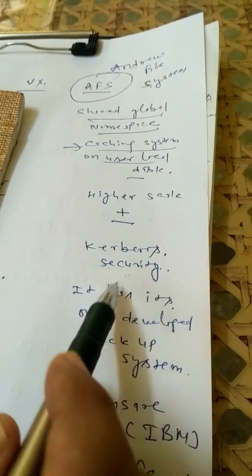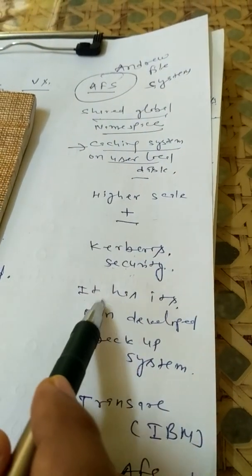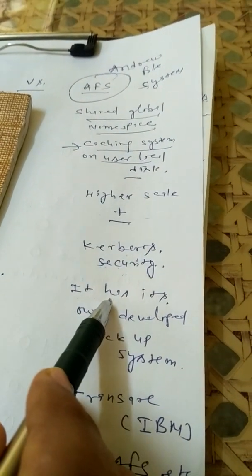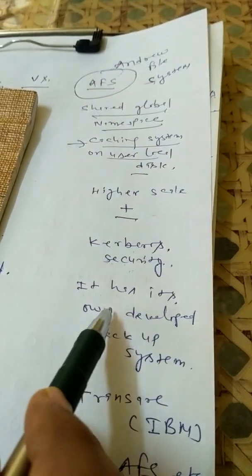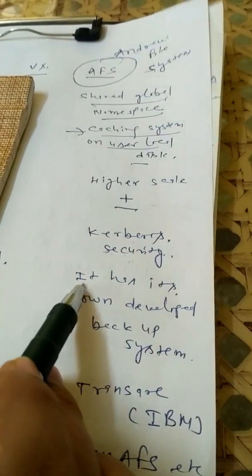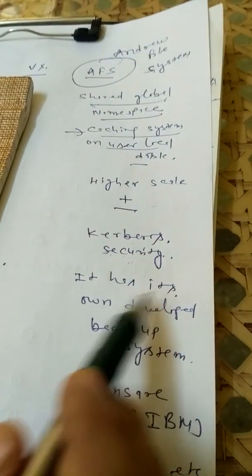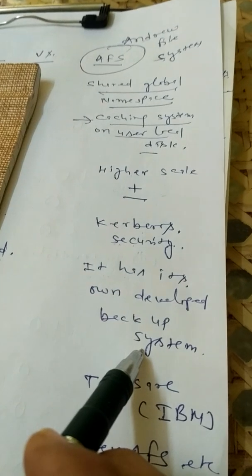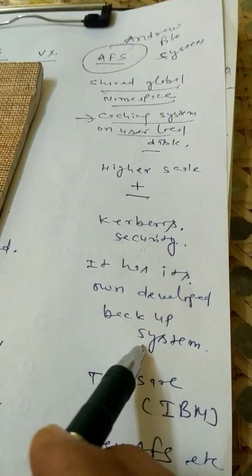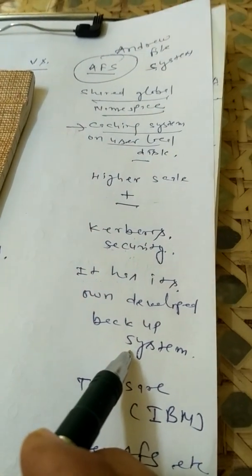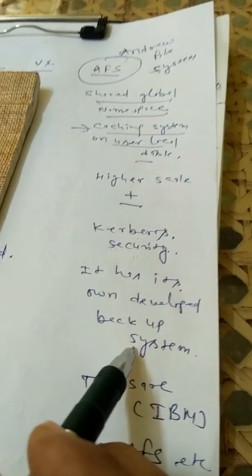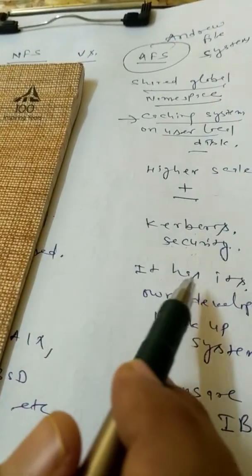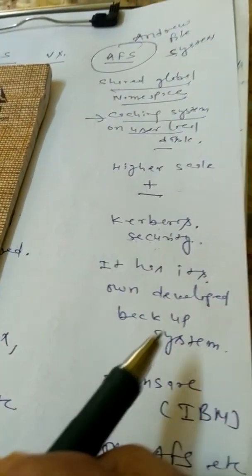If we are discussing about the backup process, the Andrew file system has its own backup process. It has its own backup system, so we can take the backup from the file and it will never lose the data.